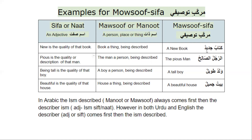Kitabun jadidun. These two tanween are telling us that it's singular and both are nakkira. So — a new book. Kitabun jadidun, a new book. The first word in the combination is a book — a thing — and this is the ism that is being described, kitabun. And the adjective is jadidun. The book is new, so new is the quality or the description of the book. And both are nakkira — just keep in mind that both are nakkira.